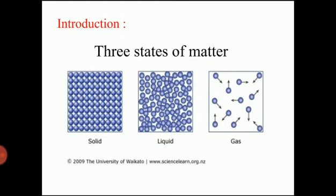You can observe on the screen three diagrams. The first one is solid, where the particles are tightly held to one another. The second one is liquid, where the particles are loosely held to one another. The third one is gases, where particles are far away from one another. By knowing the nature of arrangement of the particles, it is possible to classify substances as solid, liquid, or gases. In this topic, we are focusing only on solid.